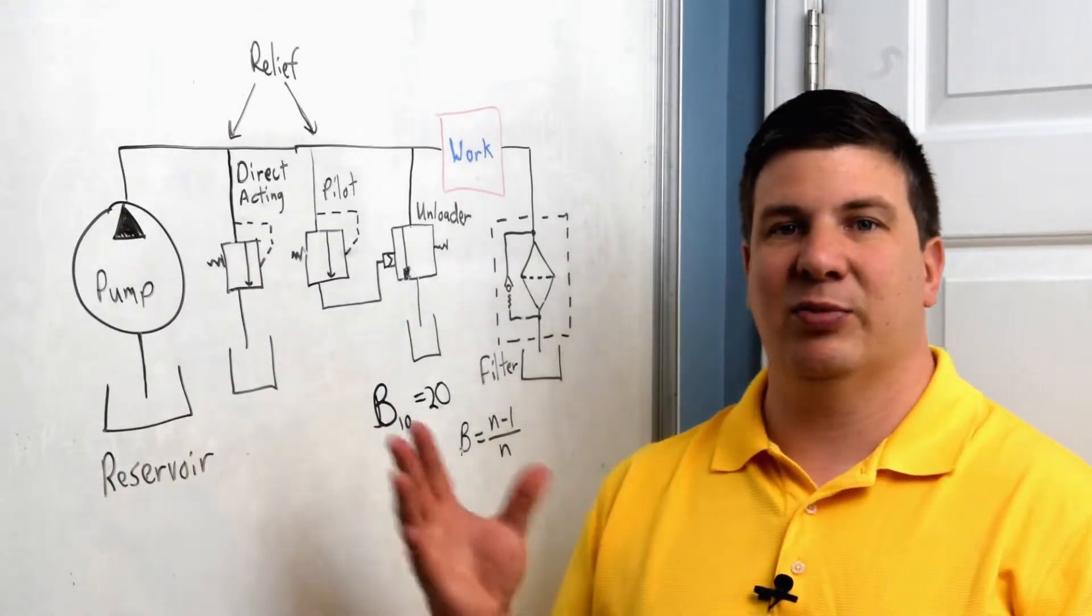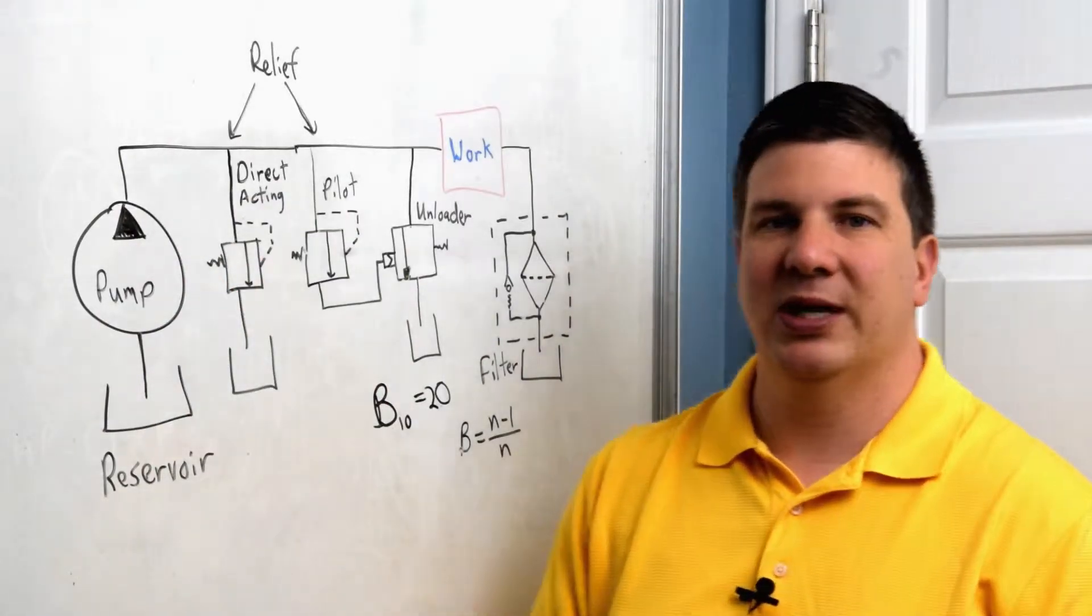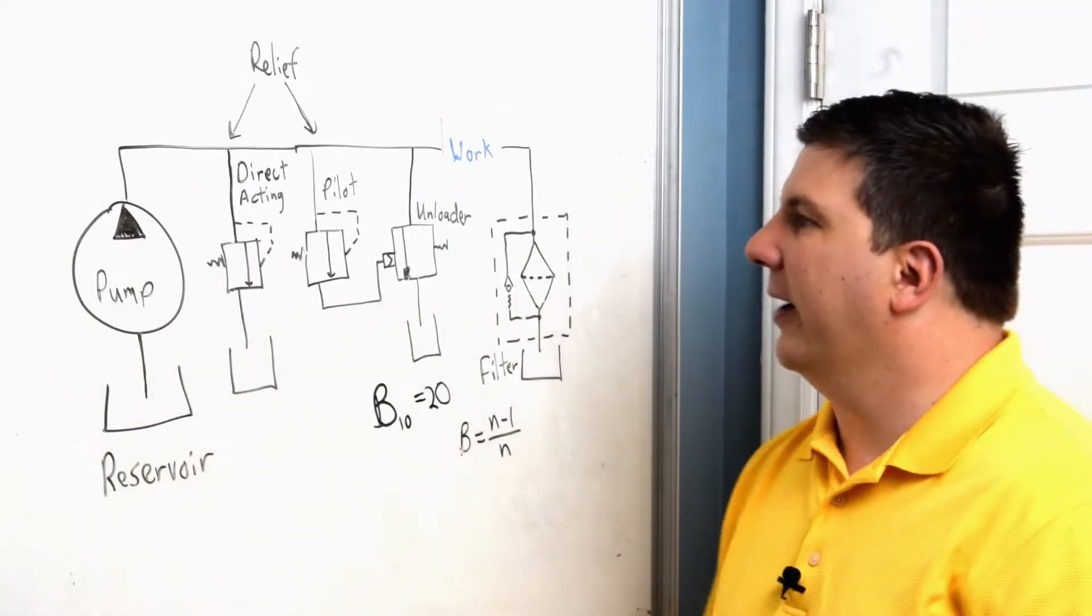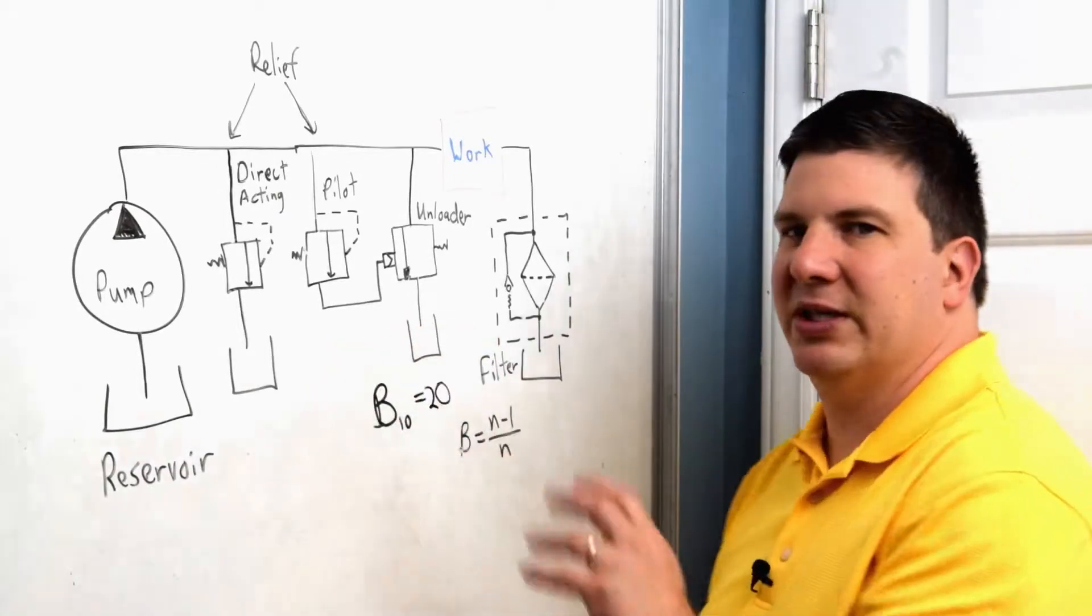So we're doing this to make sure that our system never gets over pressurized and bad things happen. You know, we violate the pressure ratings of other components. We can snap off our shaft on our pump and other sorts of things. That one's fairly simple. Pilot operating is a little bit different here.